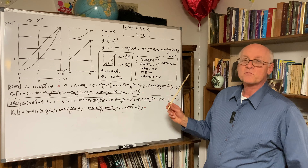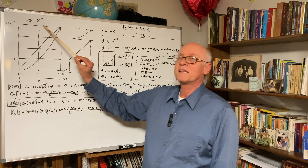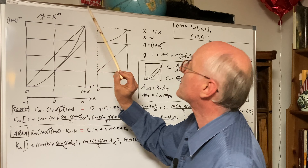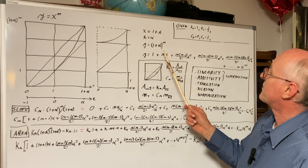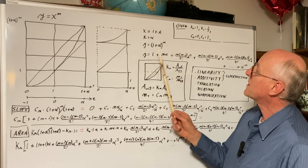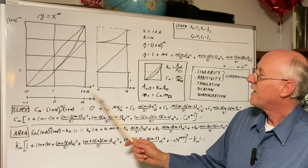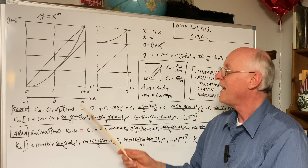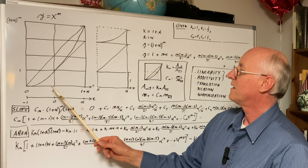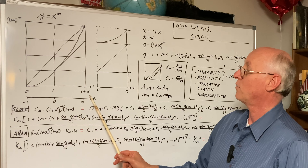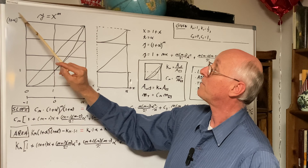Let's recap what I did in my previous video. We're looking at the curve y equals x to the n, and we're using what I call the Wahlberger translation setup, which is x equals 1 plus t. Imagine the x-axis with a t-axis superimposed, offset by 1, where the t-axis goes from 0 to alpha. On the x-axis you see 0, 1, and 1 plus alpha. Since this is y equals x to the n, you get 1 plus alpha to the n.